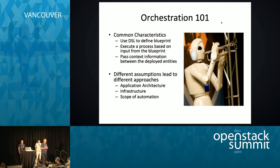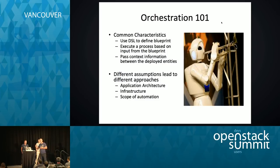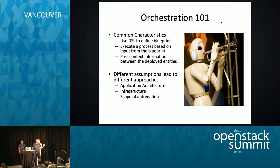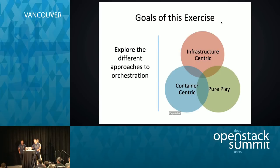There are different approaches to orchestration. In many cases it differs because of different assumptions about the architecture — for example, if I'm aiming to build microservices, I'll build the orchestration in a certain way that caters to that. If I'm trying to be more agnostic, I'll build it differently, and that impacts the design quite significantly. Similarly, the scope of the problem matters: are we dealing mostly with installation and standing up an environment, or are we trying to automate things all the way to production?